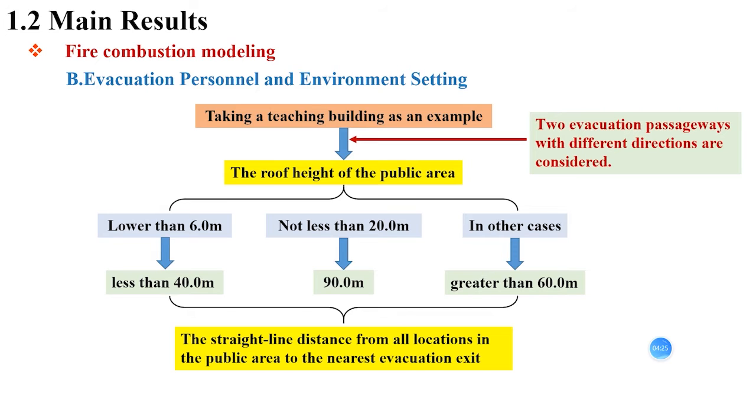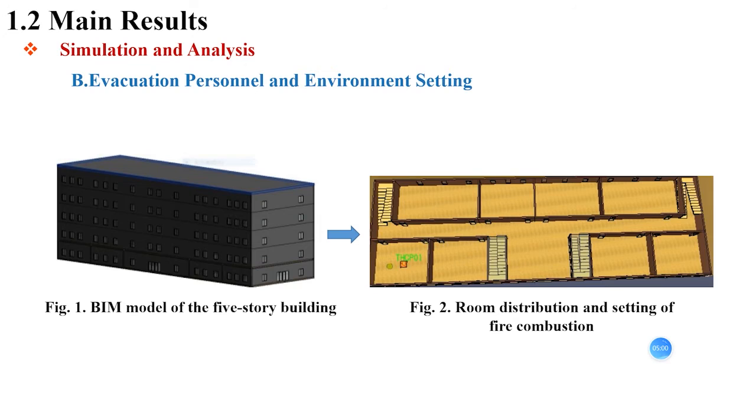Considering the changes of the number of people in teaching building during recess, school, and after school, the number of evacuees is set as 1,700. Pathsim software is used to set the evacuation personnel. Different from the adoption of the traditional software of FDS or Evac, much unnecessary work can be avoided and evacuation simulation of a 5-story teaching building will be carried out, and then we can get the simulation results.